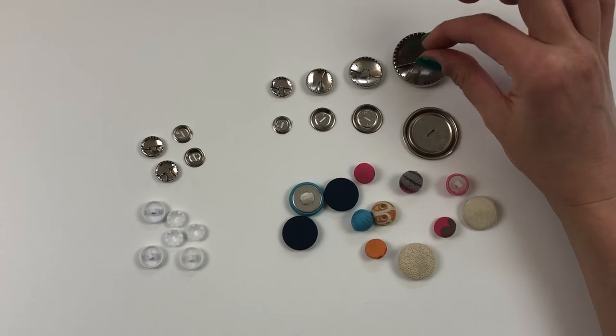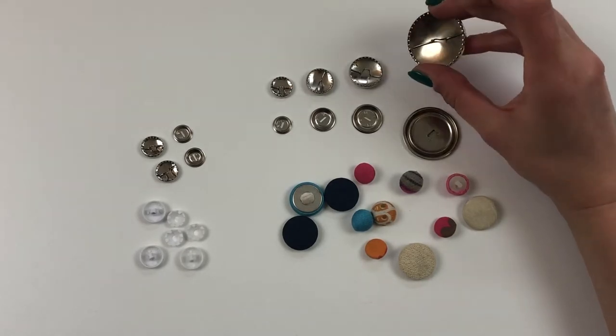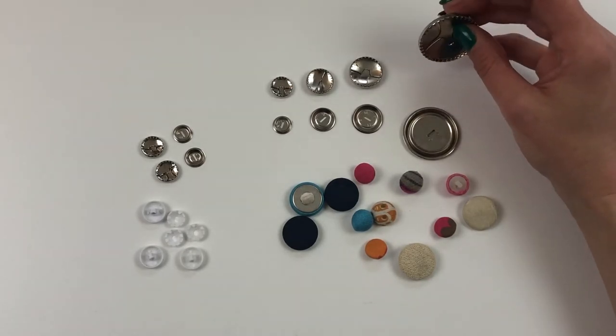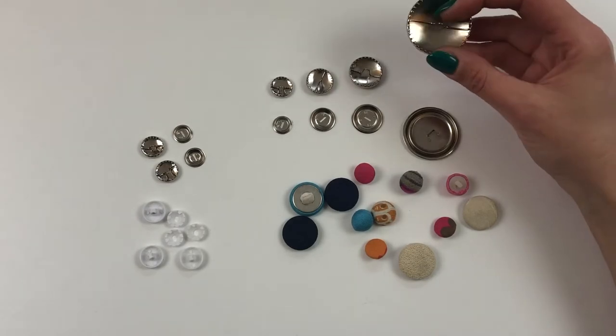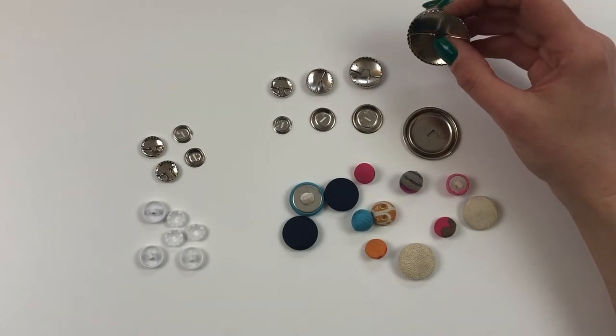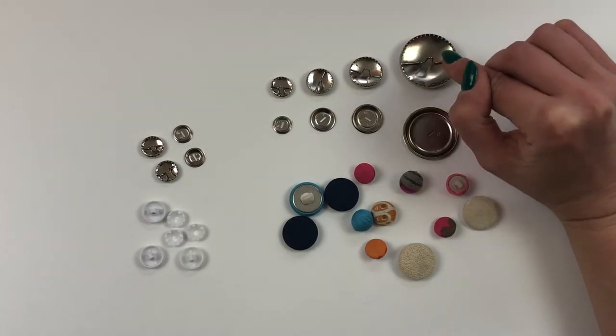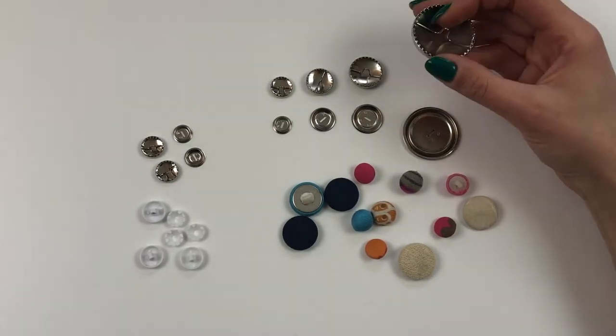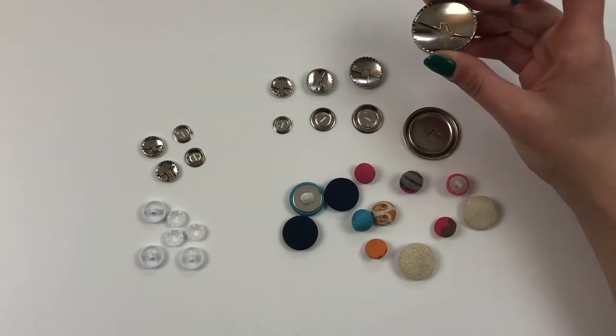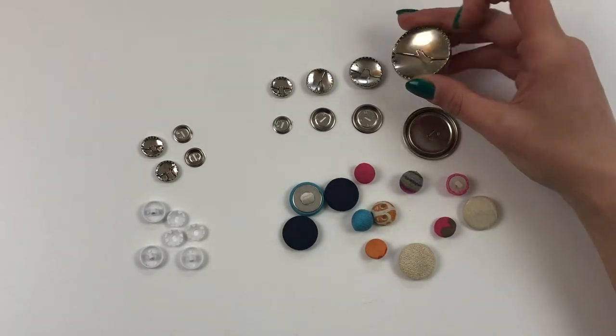When you're buying these types of buttons to cover just make sure that you're buying them for the correct purpose. These buttons are available for upholstery as well as for general dressmaking and the upholstery buttons come with a much longer shank so you want to make sure that the ones you buy are correct for the purpose that you're using them for.